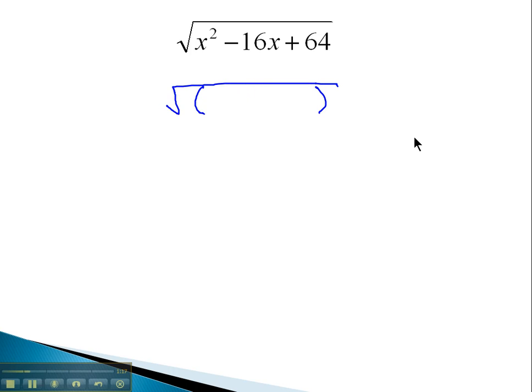You might notice that this is a perfect square factor. It factors to x minus 8 squared, or if you had factored it separately, x minus 8 times x minus 8, which can be written as x minus 8 squared.